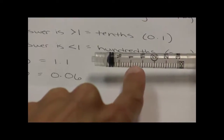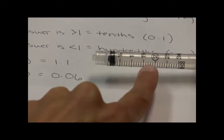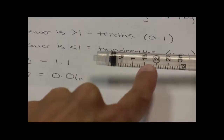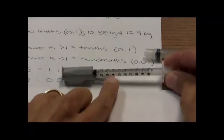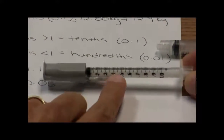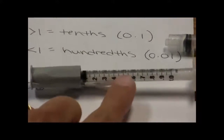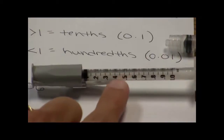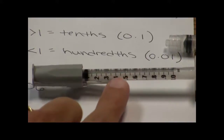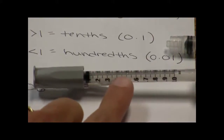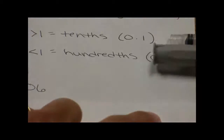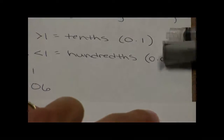So this would be 1, 1.1, 1.2, 1.3, 1.4, and then 1.5. Whereas if I have a number less than 1, I can go ahead and use a 1 cc syringe. Each of the long lines there are 0.1, and all the little lines in between are actually a hundredth. So I can accurately measure 0.41, 0.42, 0.43, etc. That's the rationale for that.